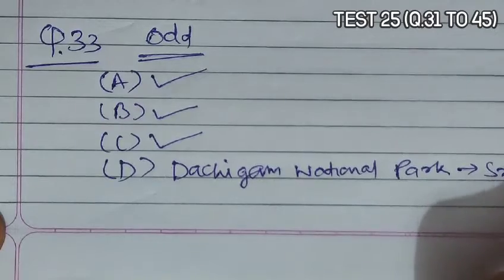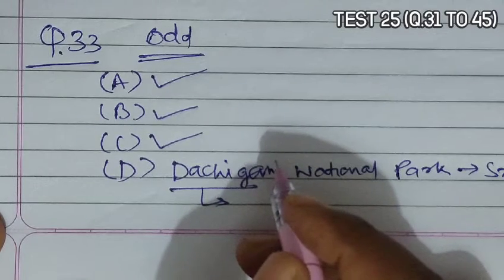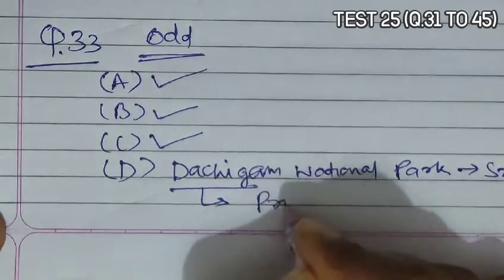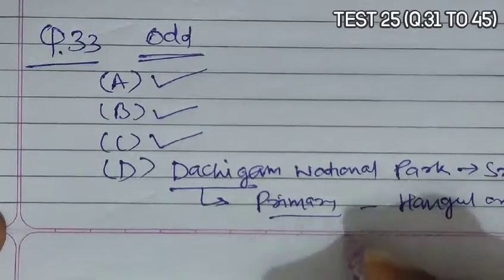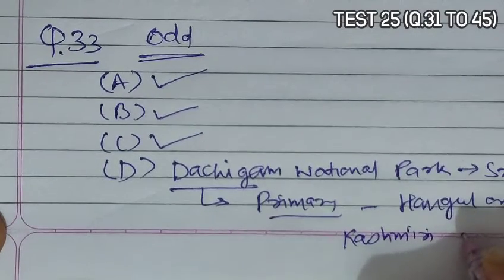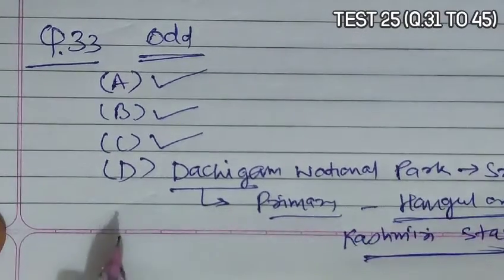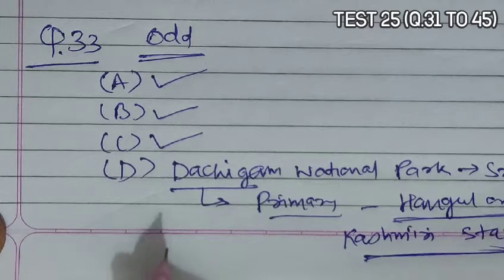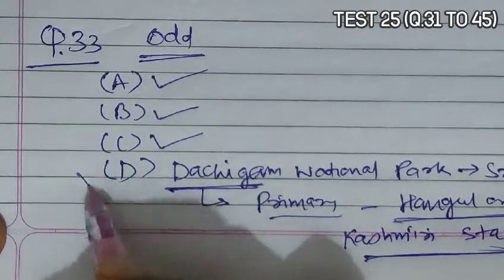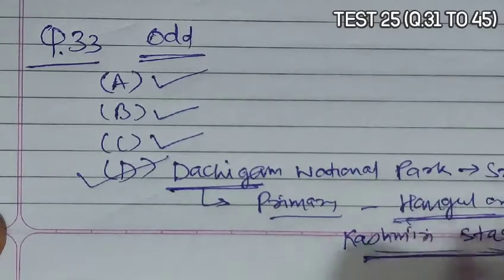Dachigam is considered a home to some of the unique Himalayan ranges of flora and fauna. Primary among them is hangul, or Kashmiri stag — the most endangered species of red deer in the world. It was declared a national park in 1981. So D is the correct answer, as Dachigam does not accommodate the snow leopard but rather hangul or Kashmiri stag.